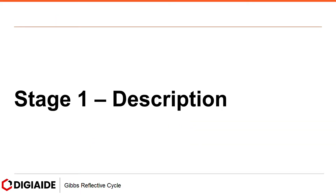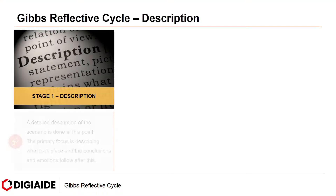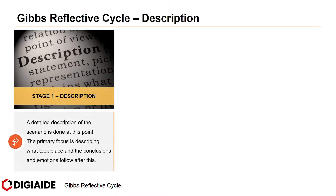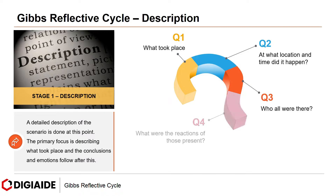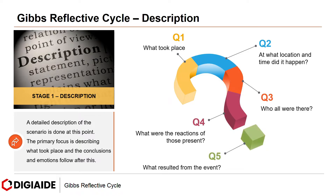Stage 1 is Description. A detailed description of the scenario is done at this point. The primary focus is describing what took place, and the conclusions and emotions follow after this. The questions are: first, what took place? Second, at what location and time did it happen? Third, who all were there? Fourth, what were the reactions of those present? And fifth, what resulted from the event?